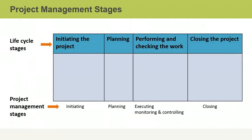A project's lifecycle from beginning to end consists of all the work required to bring a product to the market or to make a service or process operational. It has four stages, and different processes occur during each stage of the project lifecycle. Just as the lifecycle has stages, the project management processes are also divided into stages, which logically group together the processes that align to what is occurring in the project lifecycle.